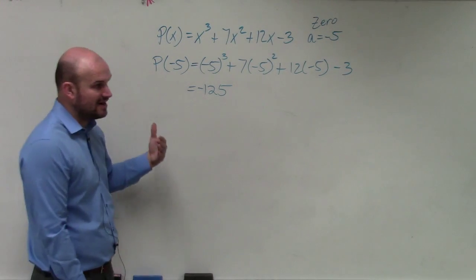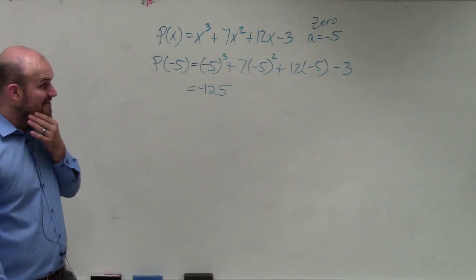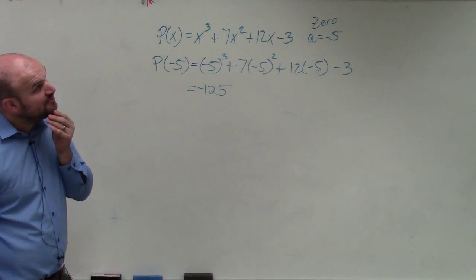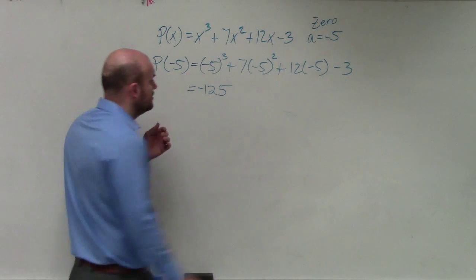So negative 5 squared is 25. 25 times 7 is going to be 175? Yes, it would be 175.